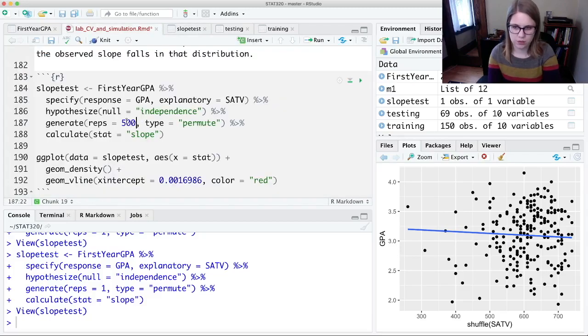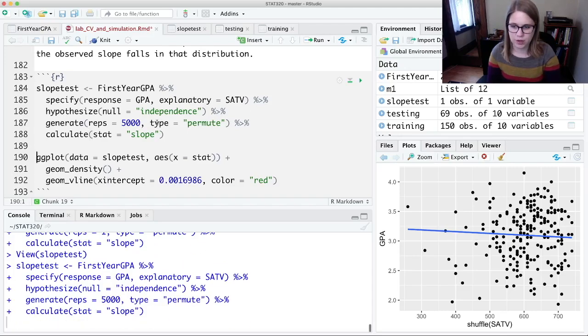So this is what I actually want to do 5,000 times. I'm going to do it a bunch of times. And if I control enter, it's going to take a second, because it has to do it 5,000 times, mix up the values, and then compute the slope and save it, and mix up the values, and compute the slope and save it, and mix up the values.